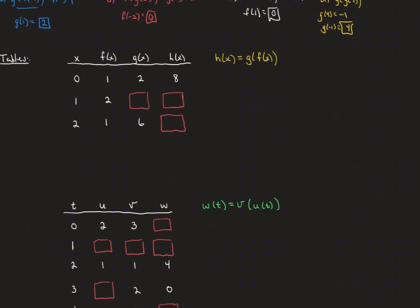Now we have a table of values where h, g, and f are related by composition — specifically, h is g of f of x. We want to find the missing pieces. For h(1): since h(1) = g(f(1)), we see f(1) = 2, and g(2) = 6. So h(1) must be 6.